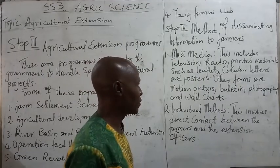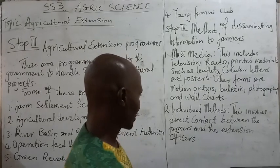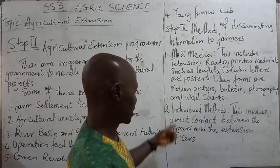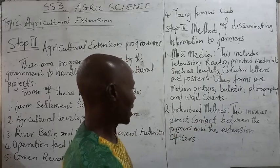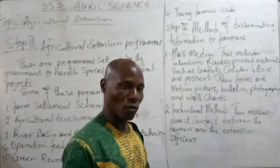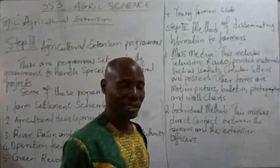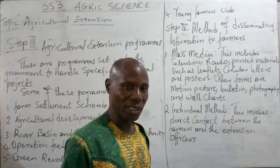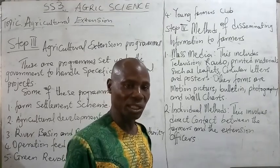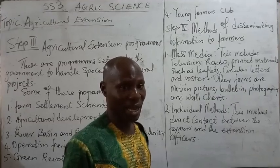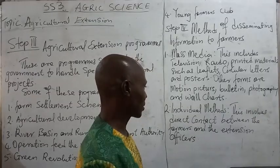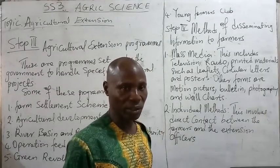Another method of disseminating information to farmers is individual methods. This involves direct contact between the farmers and the extension officer — a one-on-one approach. The farmer should be able to speak the language of the extension officer, and the extension officer should also try to understand what the farmer is talking about.